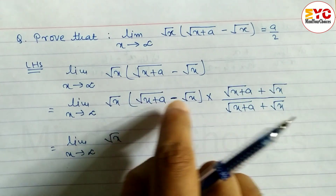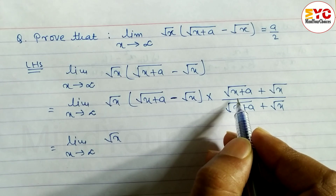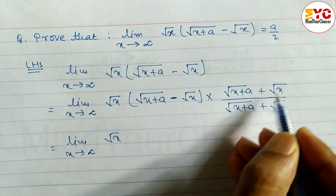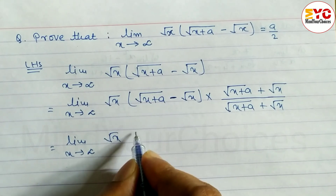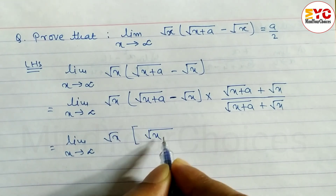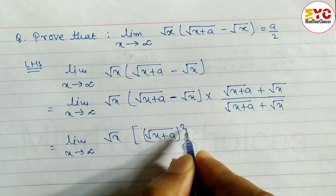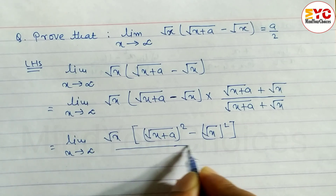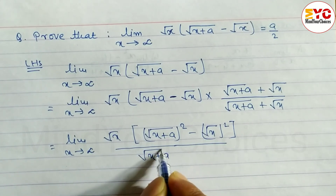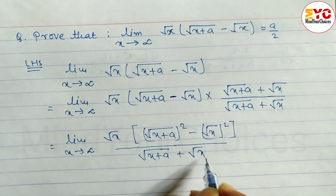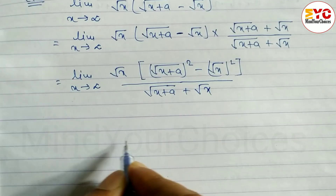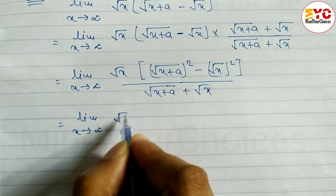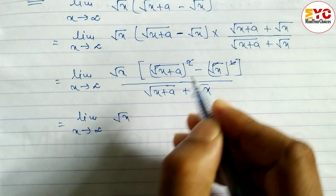Applying the identity (a + b)(a - b) = a² - b², where a is √(x + a) and b is √x, we get a² - b² in the numerator: [√(x + a)]² minus [√x]² = x + a minus x. So after simplification, limit x tends to infinite of √x times [x + a minus x] divided by [√(x + a) plus √x]. The square and root cancel.